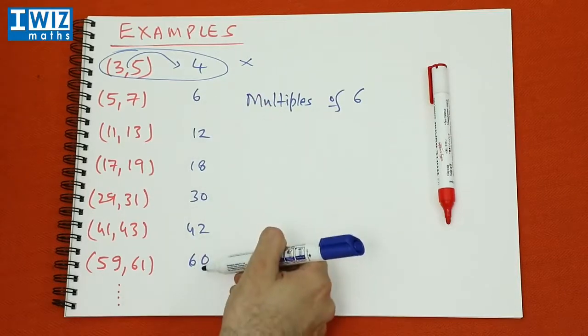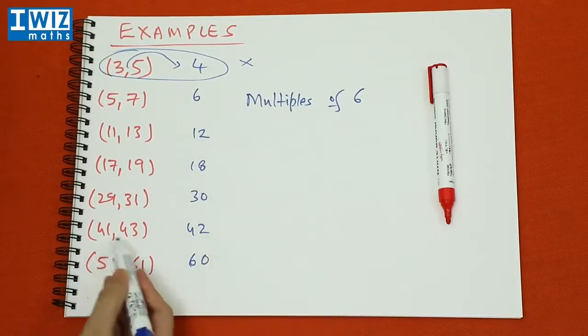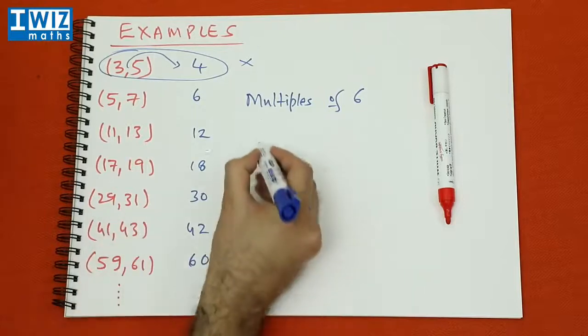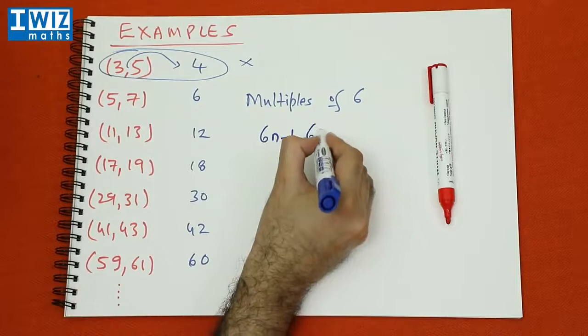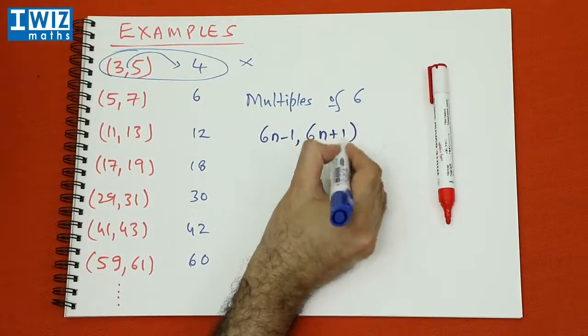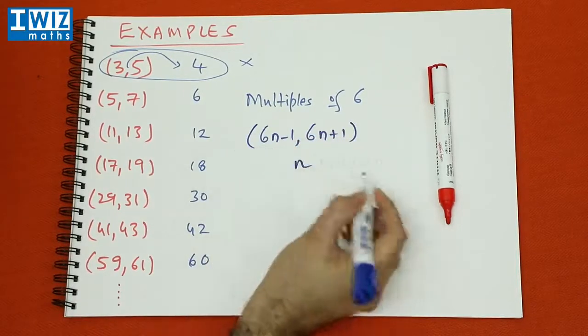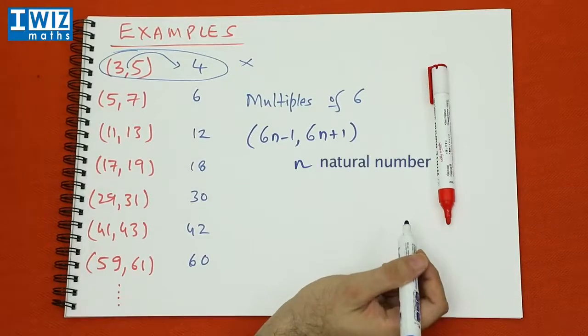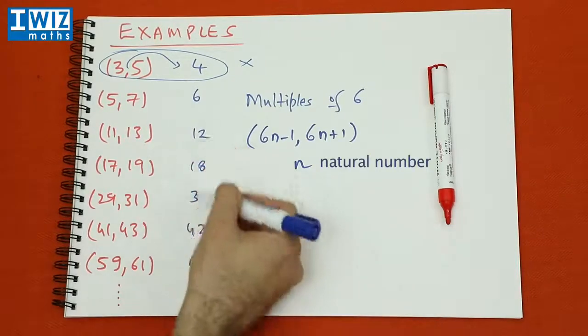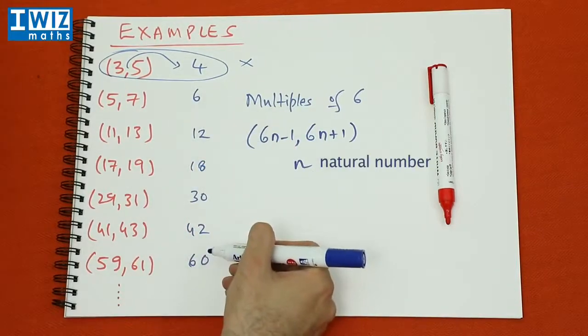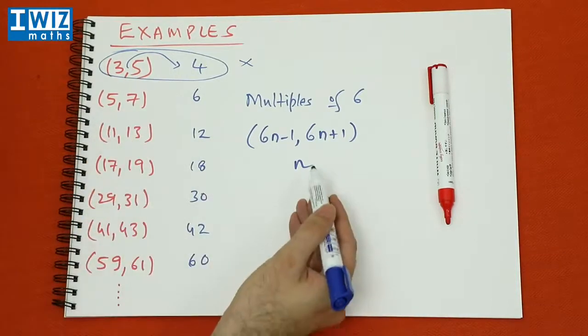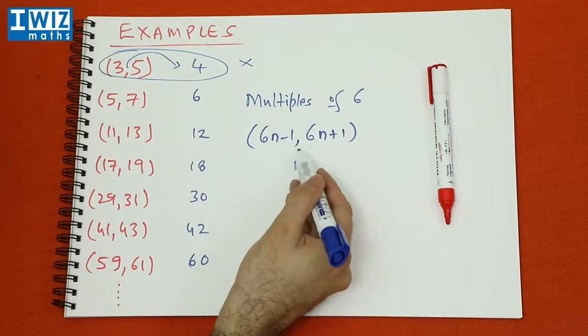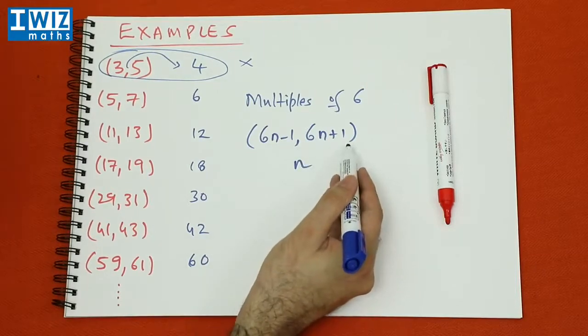So if these numbers here are multiples of 6, the structure of the twin primes is 6n minus 1, 6n plus 1, for n a natural number. That's sort of easy to see. So if the middle number is a multiple of 6, then the structure of the twin primes is 6n minus 1, 6n plus 1.